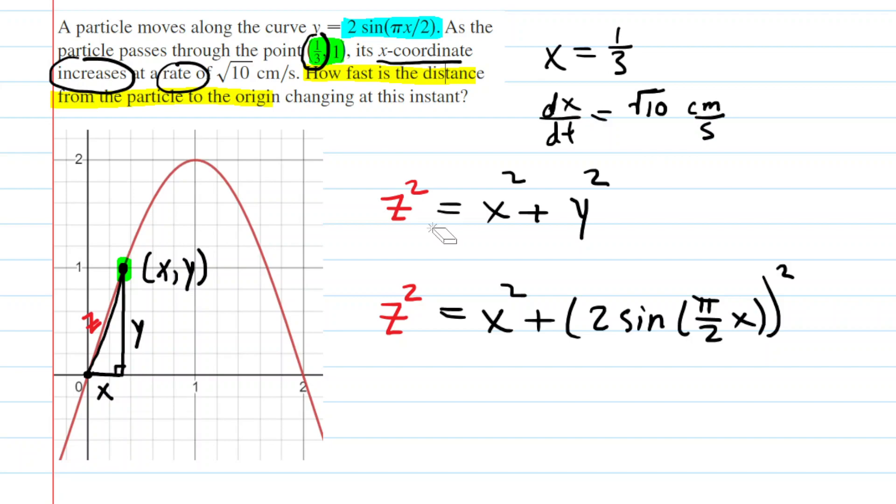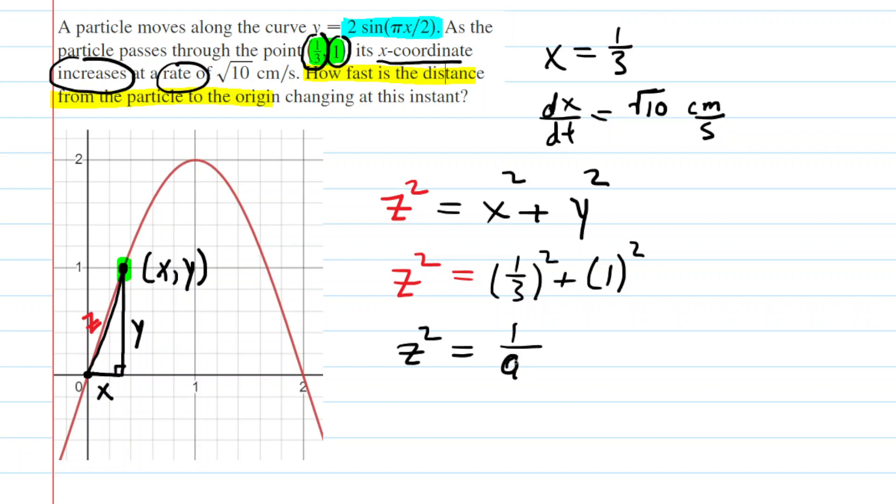Now what we don't have is z, but that's going to be relatively easy to find because we have this equation right here. All we need to do is plug in our x coordinate, which was 1/3, and don't forget to square that. And then our y coordinate—you look back at the data—and that was equal to positive 1. So now we have z².